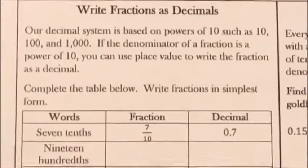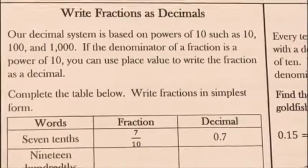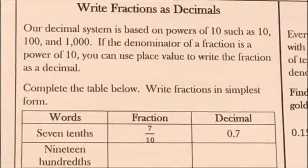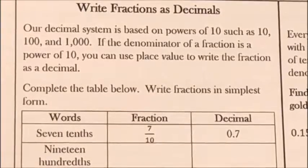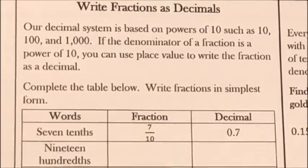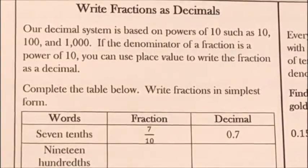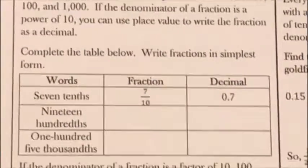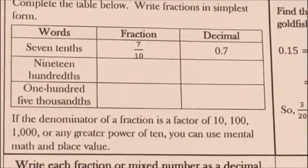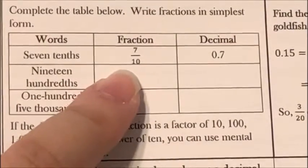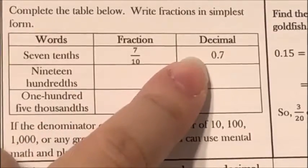When writing fractions as decimals, our decimal system is based on powers of 10, such as 10, 100, and 1,000. If the denominator of a fraction is a power of 10, you can use place value to write the fraction as a decimal. For example, 7 tenths can be written as 7 over 10, or 0.7.